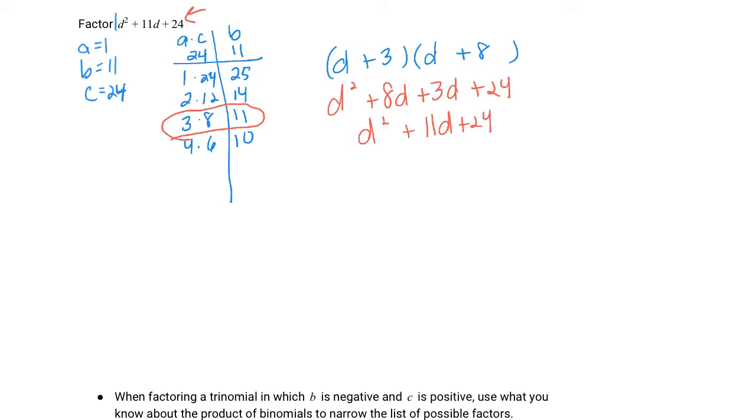Now, a few things I want you to know going forward. If you have a times c is positive and b is positive, like the two that we've done previously, both of your factors are going to be positive. If you have a times c is positive and b is negative, both of your factors will be negative. If you have a times c is negative, your signs will be opposite in the a times c column.